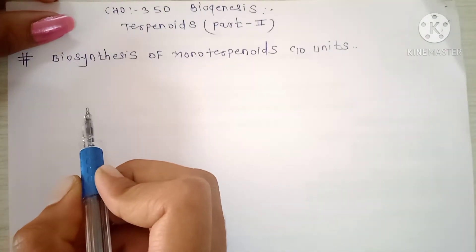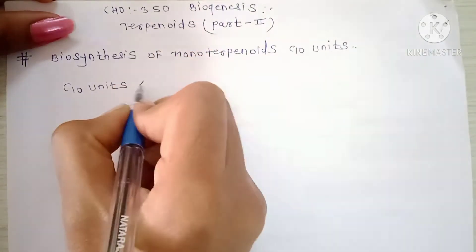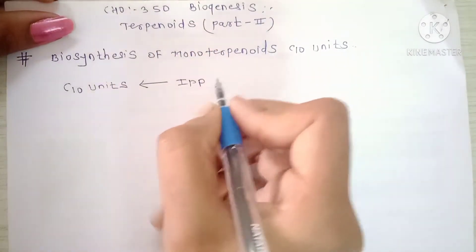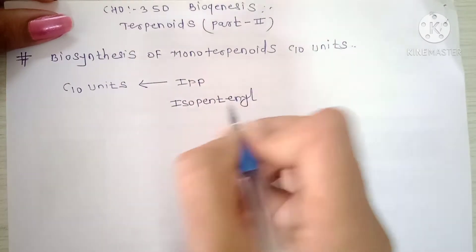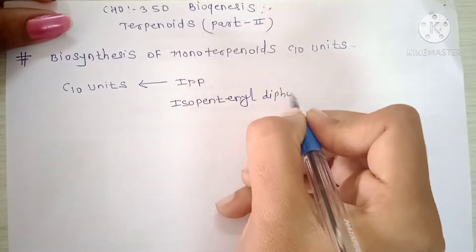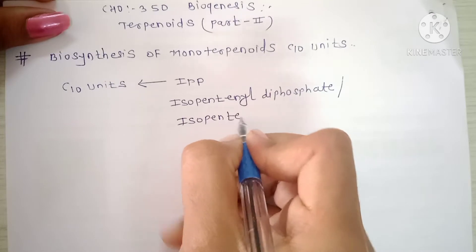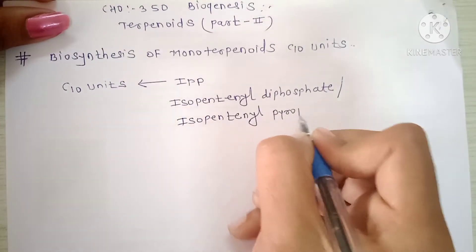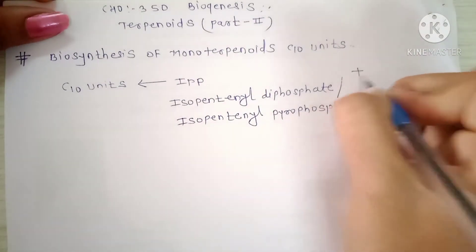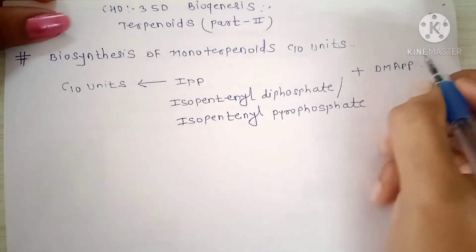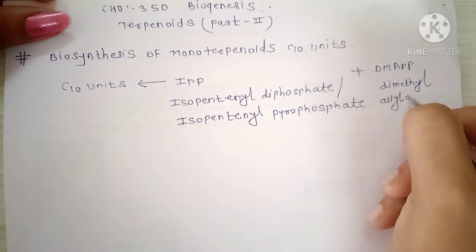C10 units are synthesized from IPP molecule. IPP means isopentenyl diphosphate or isopentenyl pyrophosphate, plus DMAPP. DMAPP means dimethylallyl pyrophosphate.